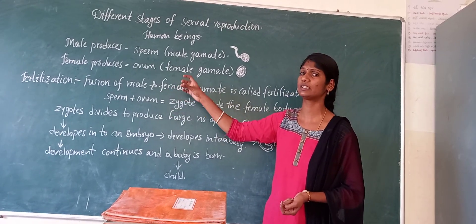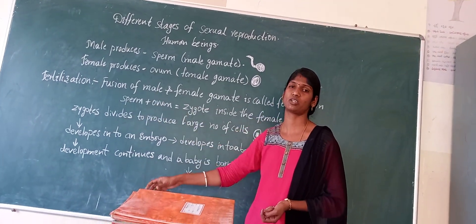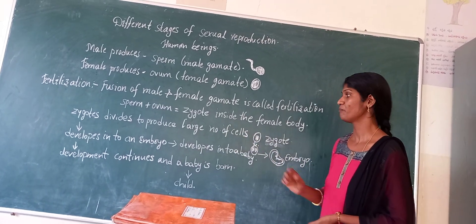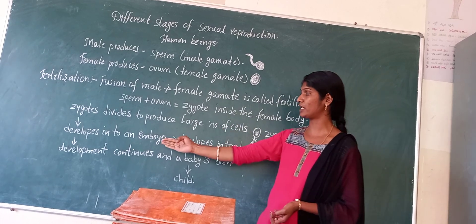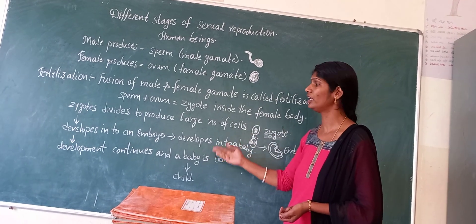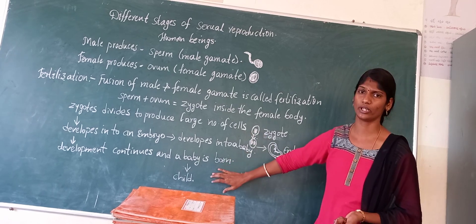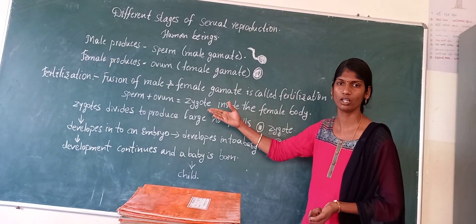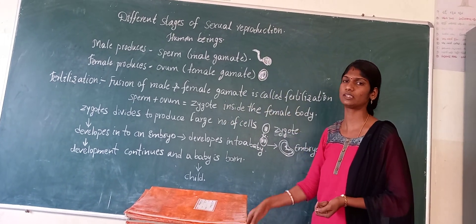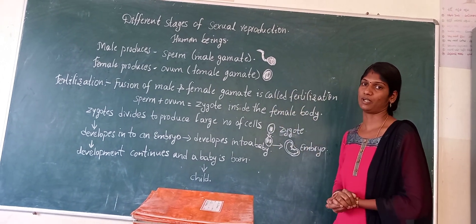When sperm and ovum come together, that is called a zygote. After zygote formation, it again produces a large number of cells. When the large number of cells are formed, it develops into an embryo. That embryo again develops into a baby. The baby continues to grow and becomes an adult. The adults are going to reproduce again. This is the continuous process — it is a very simple topic.